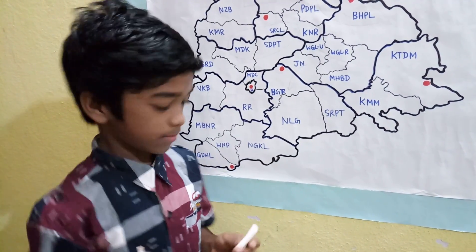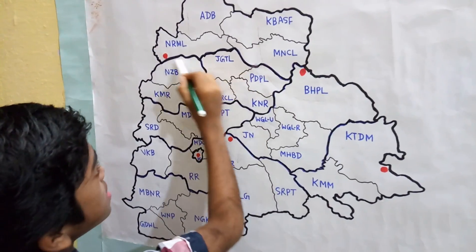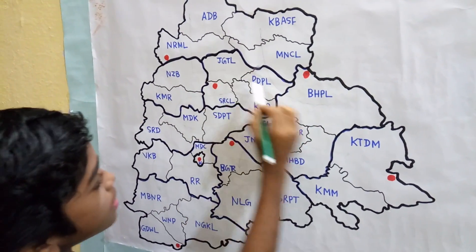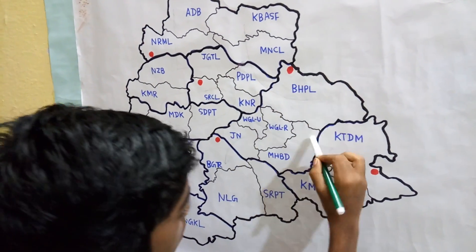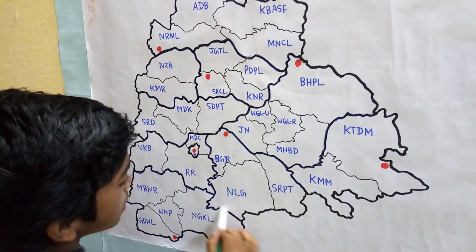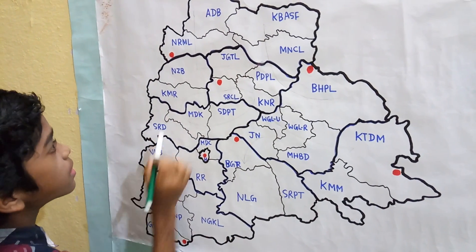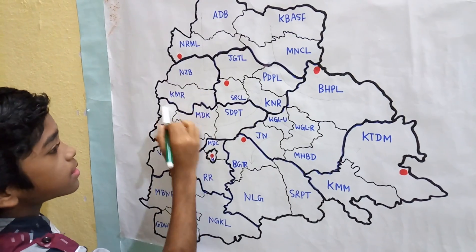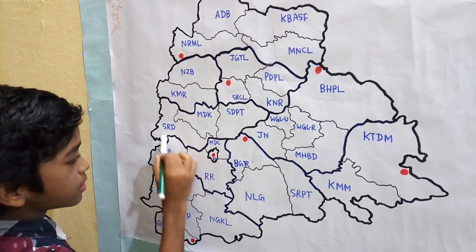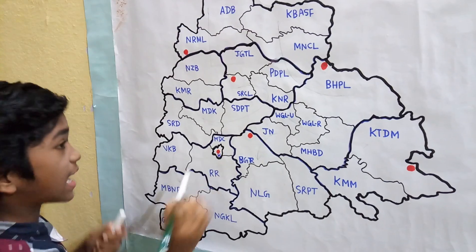Before going to discuss those zones, we recall the old 10 districts in Telangana. They are Adilabad, Karimnagar, Warangal, Khamam, Nalgonda, Mahabubnagar, Nizamabad, Medak, Rangareddi, and Hyderabad.